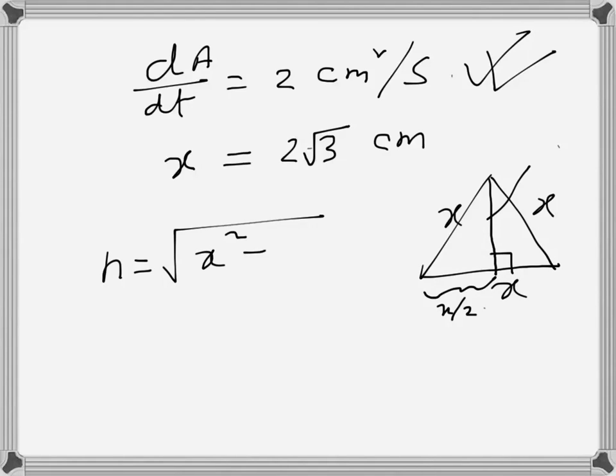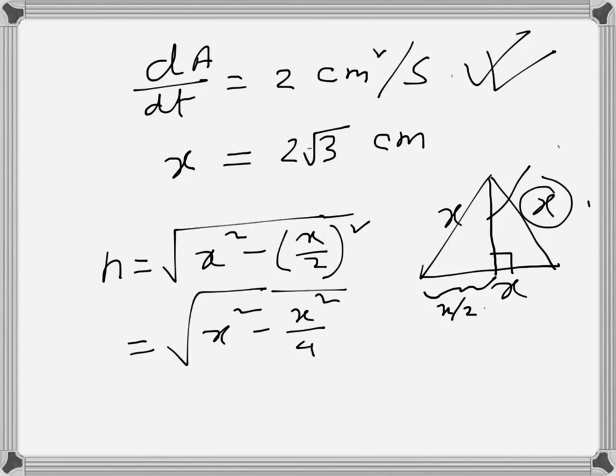That's X² minus (X/2)² because this one is the hypotenuse, so X² minus X²/4. So that's 3X²/4, or √3/2 X. So that's the height.